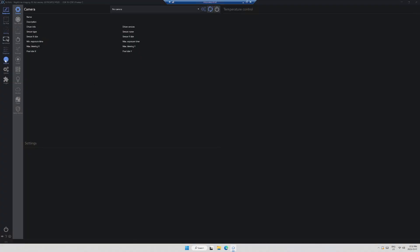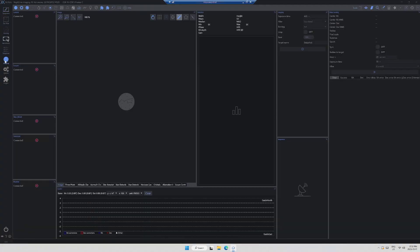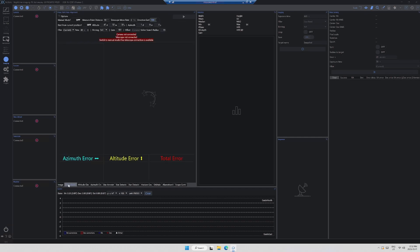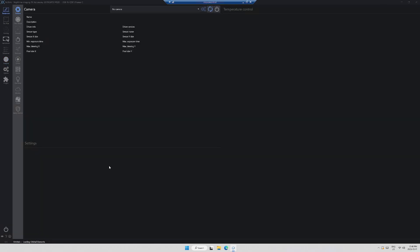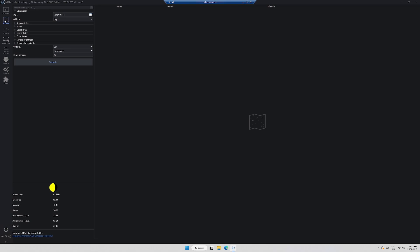But once the mount is aligned, now we can get down to business. Using a technique called plate solving, I have the telescope take a test image of the sky, and using the locations of the stars, the computer determines in which direction the telescope is pointing. I can then select an object in Nina and tell the computer to tell the mount to slew and line up on that object.